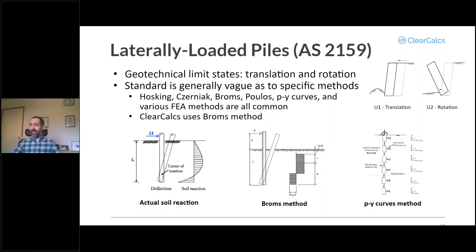Next, once we have that loading information, we'll go to calculating the geotechnical capacity of the retaining wall - that means the laterally loaded piles standard, AS 2159. With this, you're going to basically be assessing all the geotechnical limit states, that means translation and rotation.